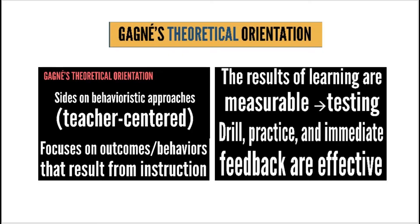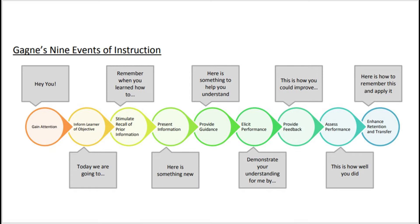The 9 events provide a framework for an effective learning process. The steps give designers an outline to use prior to performing teaching activities. The 9 events of instruction can be divided into 3 segments, namely preparation — which includes gaining attention, informing learners of the objectives, and stimulating recall of prior learning.